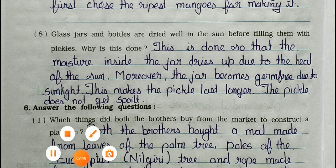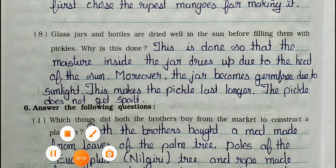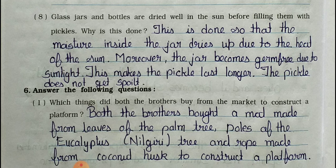Question 8: Glass jars and bottles are dried well in the sun before filling them with pickles. Why is this done? Answer: This is done so that the moisture inside the jar dries up due to the heat of the sun. Moreover, the jar becomes germ-free due to sunlight, which makes the pickle last longer and not get spoiled.